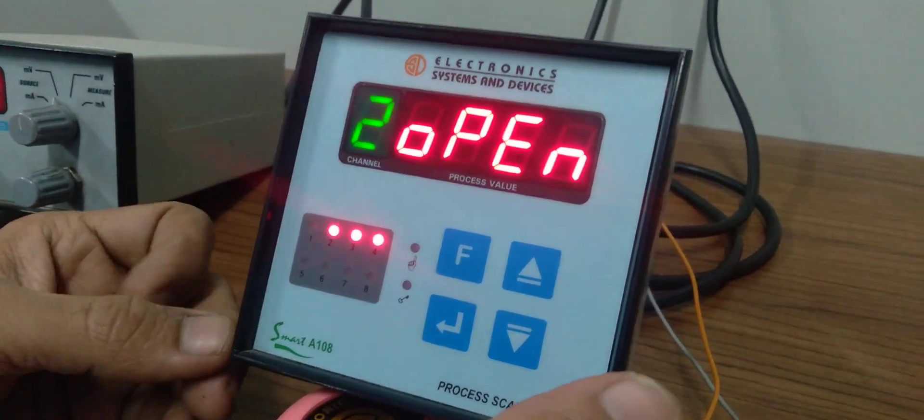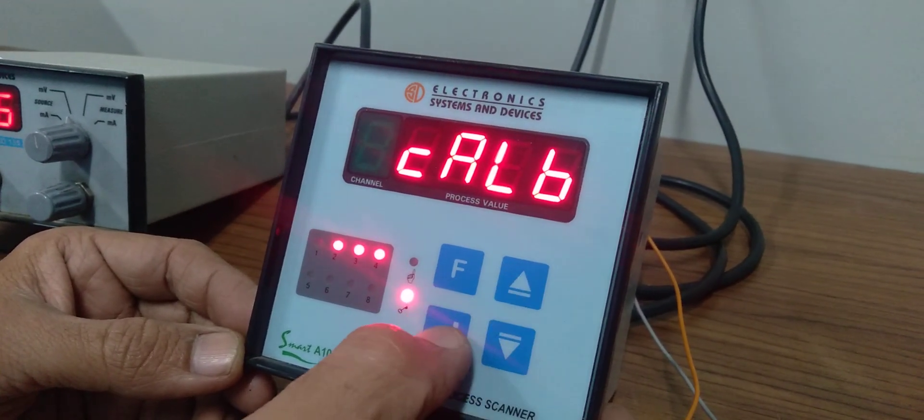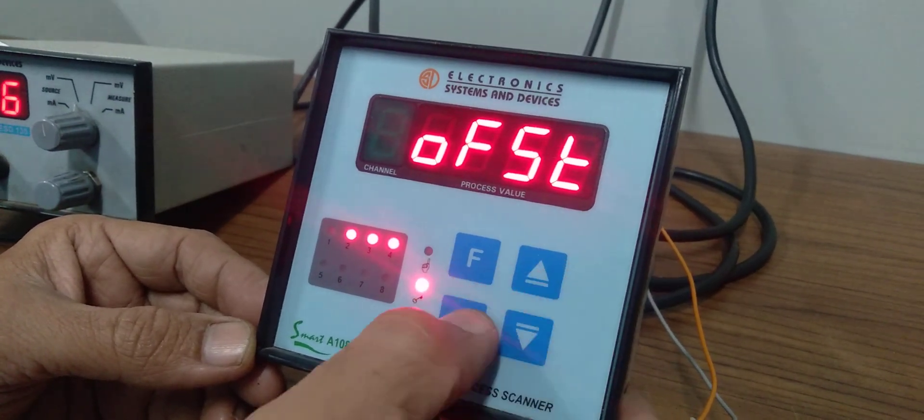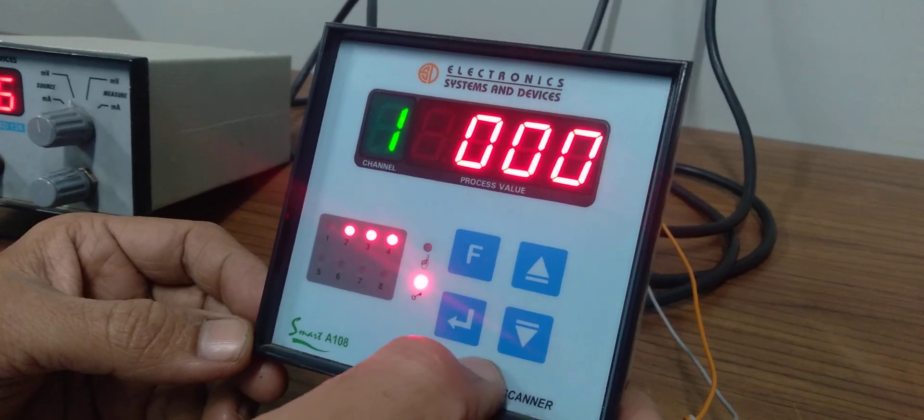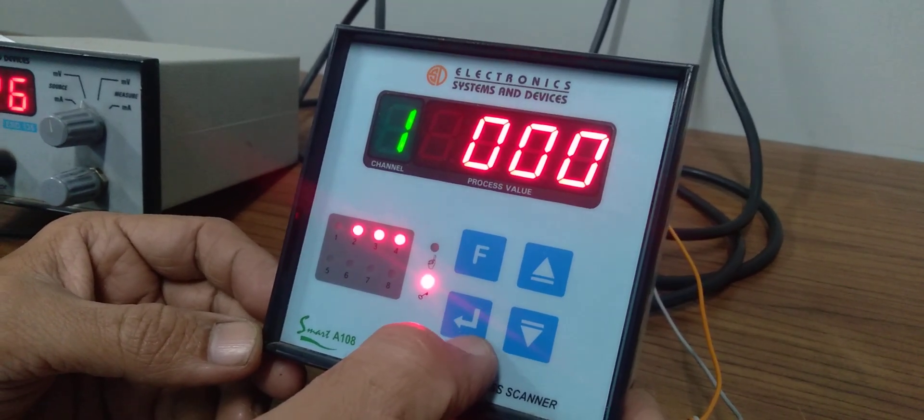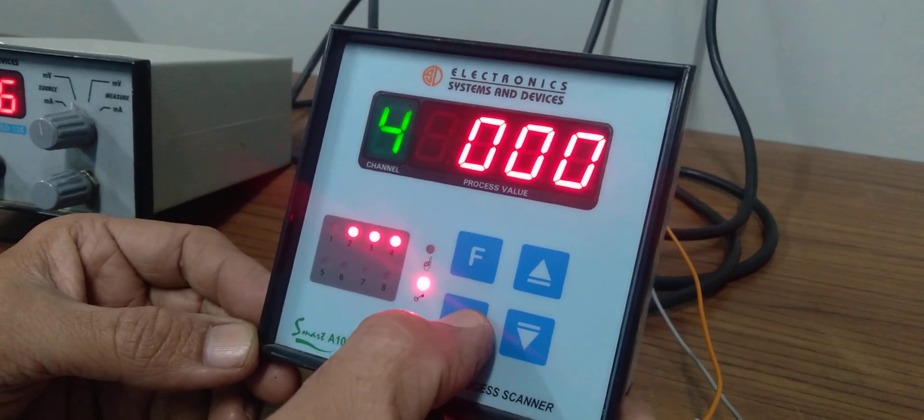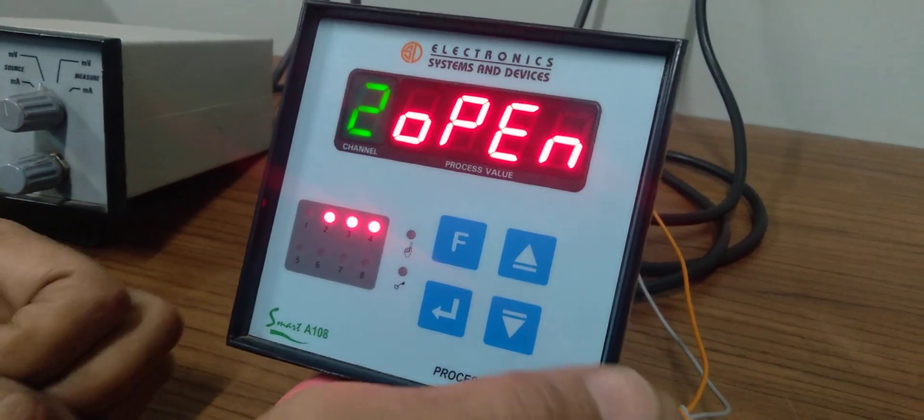In offset mode, you can keep plus or minus 10 or 20 degrees. This is to correct sensor error. It can be given plus or minus, and each channel will have its own offset.